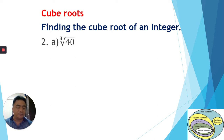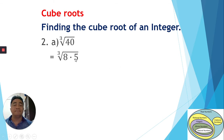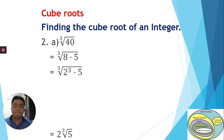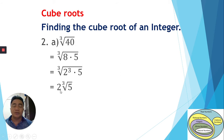So 40 is 8 times 5, and we replace 8 with 2 to the power of 3. Our index is already 3, so since we have 2 to the power 3, we can extract that out. But 5 stays inside the radical because it doesn't have power 3. So 2 is outside, and we have the cube root of 5. Therefore, the cube root of 40 is 2 times the cube root of 5.